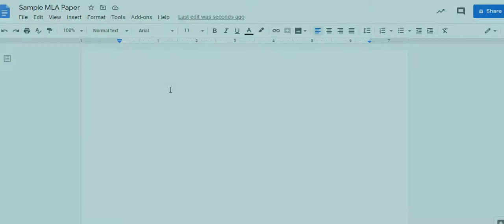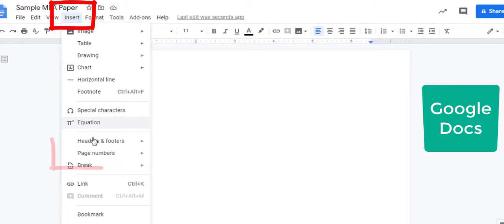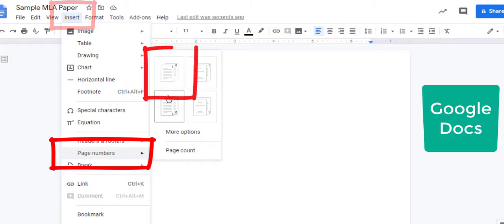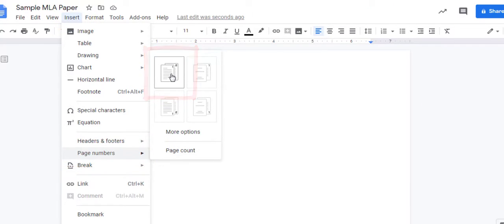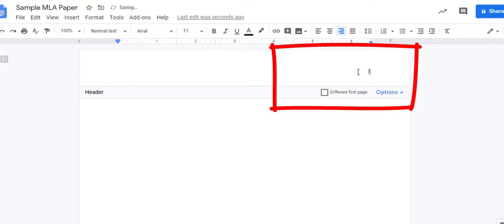To insert a page number in a header in Google Docs, go to Insert, Page Numbers, and select the option that shows the number at the top right of every page. Again, add your last name before the page number.